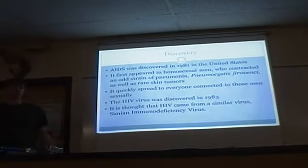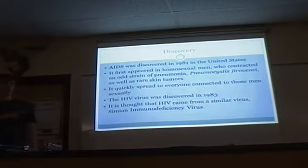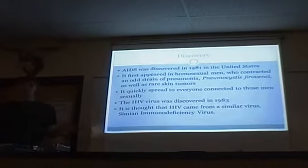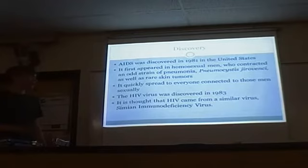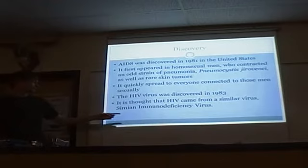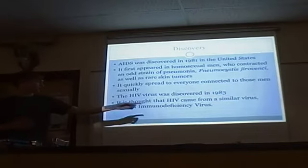AIDS was discovered in 1981 in the United States. It first appeared in gay males and then spread to anyone who was in sexual contact with them, shared a needle, or really anytime they would be in contact with their bodily fluids. The virus itself was discovered in 1983, and it's thought that HIV came from the simian immunodeficiency virus, but we don't have any real proof.